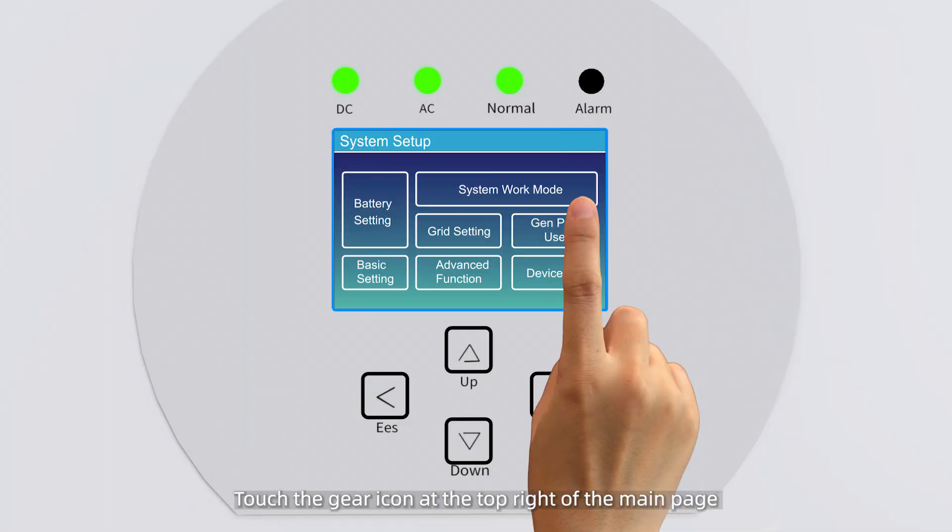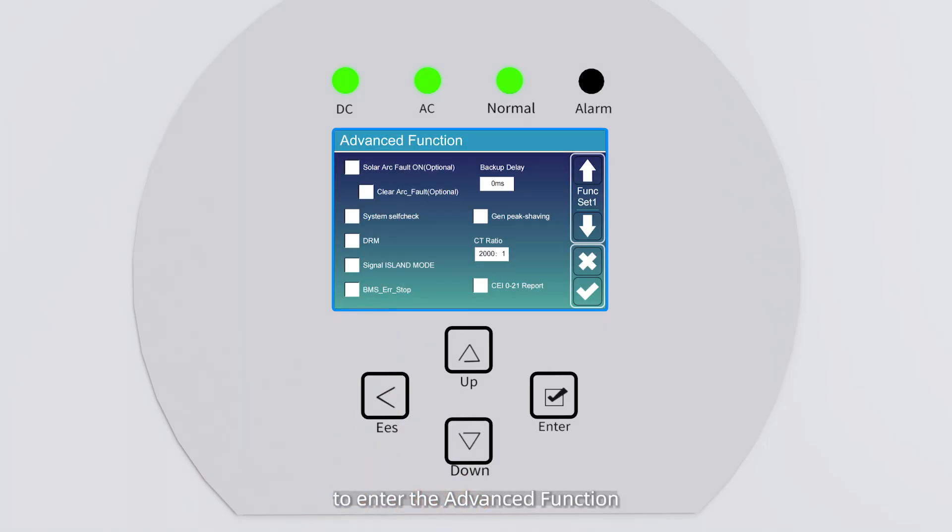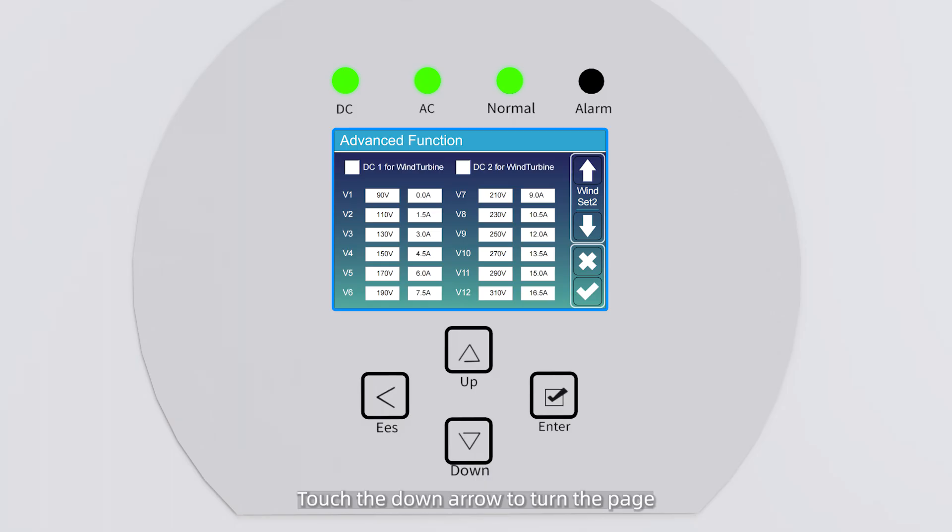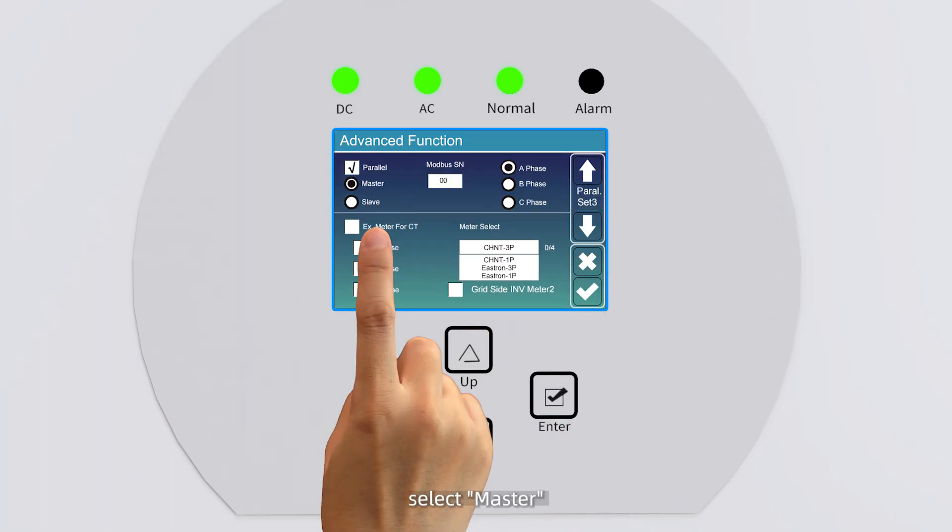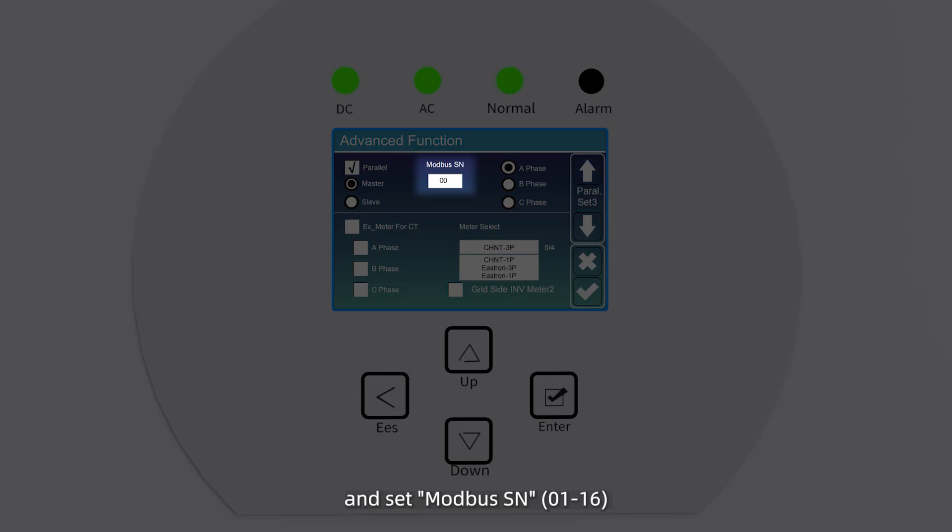Touch the gear icon on the top right of the main page to enter the advanced function. Touch the down arrow to turn the page. Check the parallel mode. Select Master and set Modbus SN01 to 16 to adjust the Modbus communication address of the master inverter.